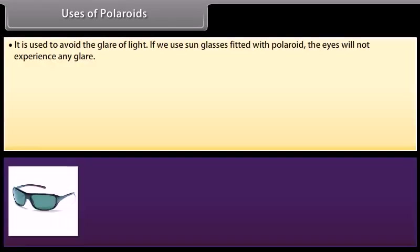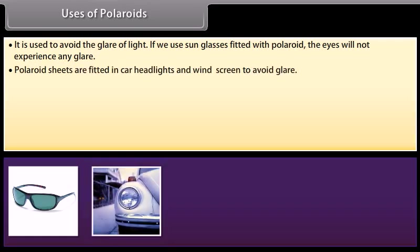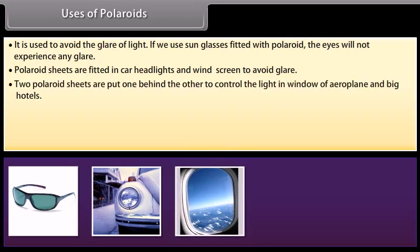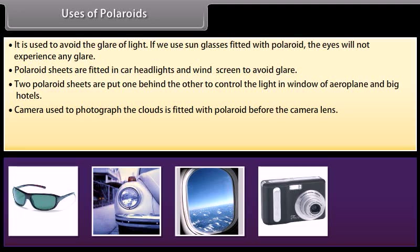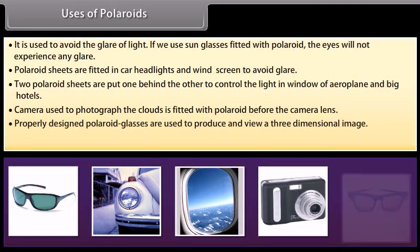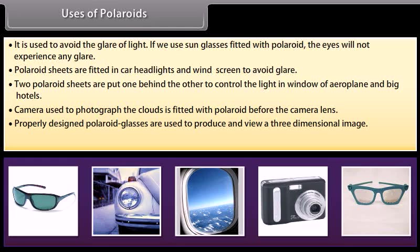Some important uses of polaroids: They are used to avoid the glare of light; sunglasses fitted with polaroids prevent the eyes from experiencing glare. Polaroid sheets are fitted in car headlights and windscreens to avoid glare. Two polaroid sheets are put one behind the other to control light in windows of aeroplanes and big hotels. Cameras used to photograph clouds are fitted with a polaroid before the lens. Polaroid glasses are used to produce and view three-dimensional images, and they are also used for studying optical properties of metals.